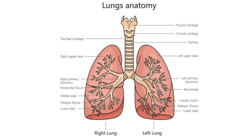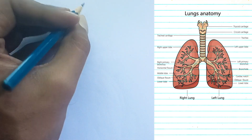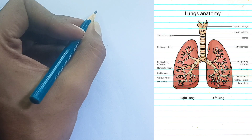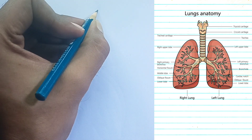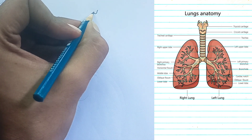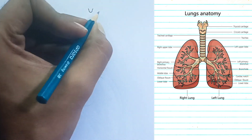This diagram illustrates the anatomy of the human lungs and associated respiratory structures. Here's a breakdown of the key components shown. Upper respiratory and laryngeal structures, top to bottom.